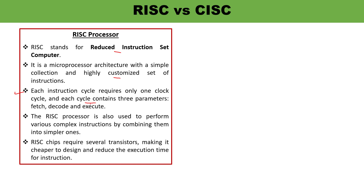In case there is a requirement to perform some complex tasks, those complex tasks can be executed by combining many simpler tasks. RISC chips require several transistors, and a key property of RISC is reduced execution time for instructions.